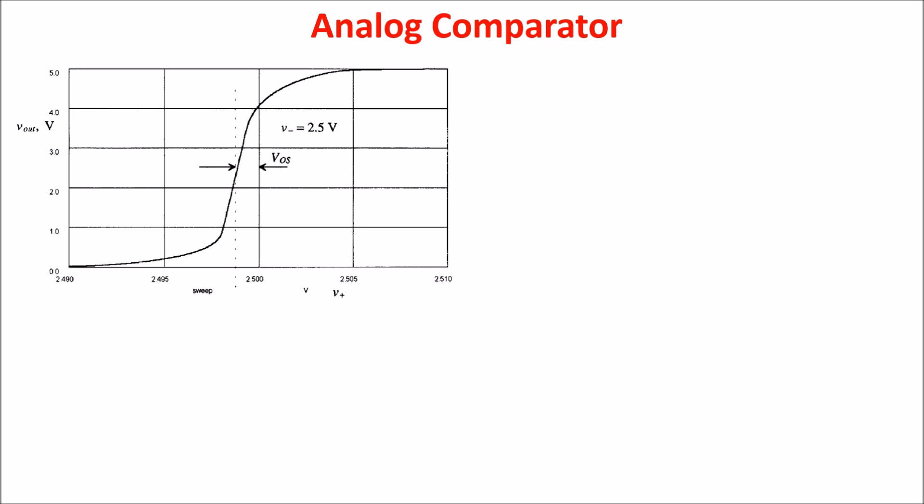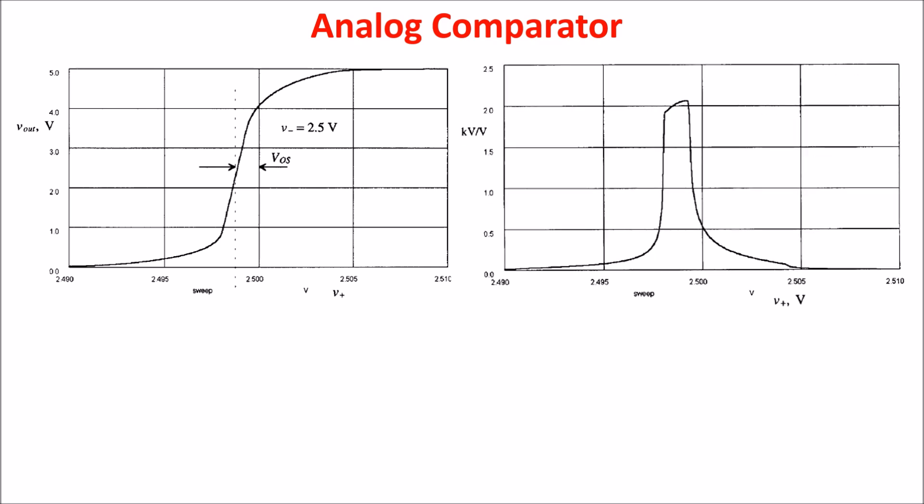With V minus held to 2.5 volts and V plus swept from 2.49 to 2.51 volts, we see the output voltage with highlighted the offset voltage of about 1 millivolt. The input offset voltage is defined as the voltage that must be applied between the two input terminals of the differential amplifier to obtain 0 volts at the output. If we take the derivative of this curve, we get the gain of the whole circuit, which is 2000. Considering the output range between 0 and 5 volts, it means that approximately 2.5 millivolt is needed to make the comparator output change logic levels.